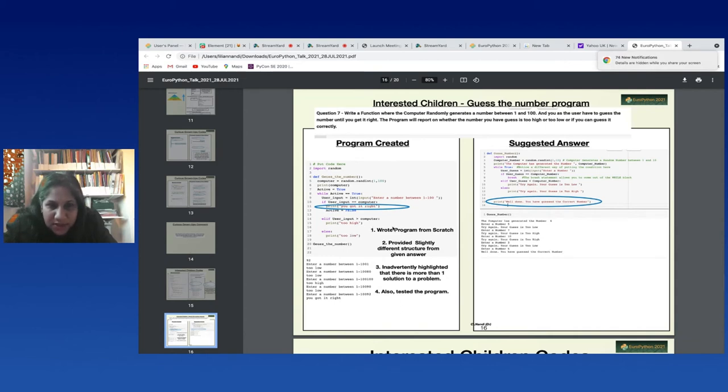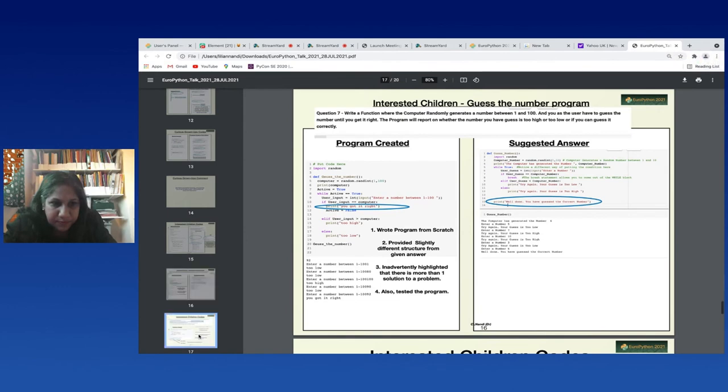Now what's quite interesting, I found that they wrote a program and I gave them a model answer, but their program was slightly different in structure from the given answer here. So they inadvertently highlighted the fact that there is more than one solution to a problem. And they also tested the program of their own volition and quite happily until they got the program that they created correct.